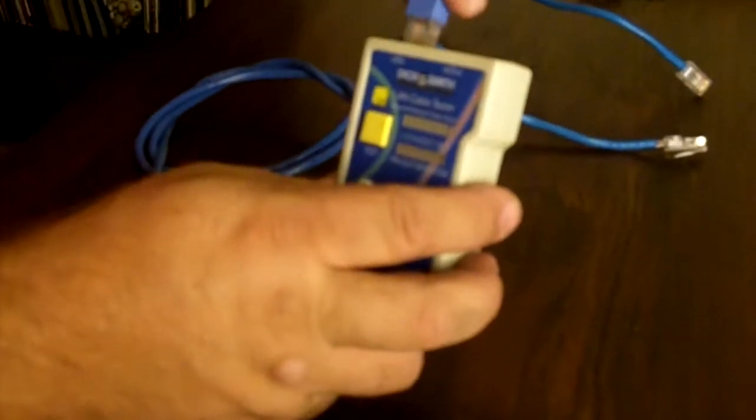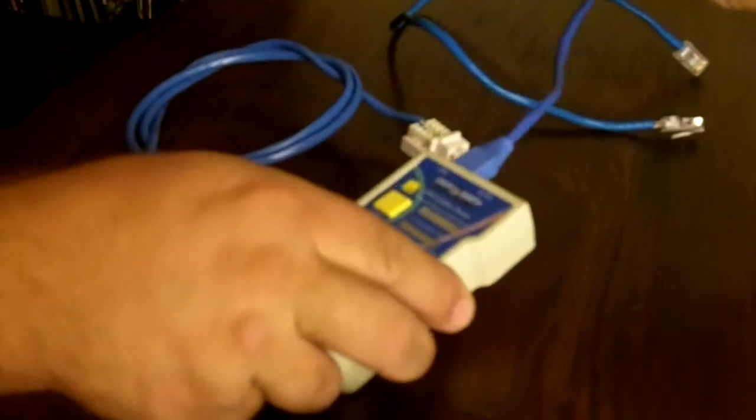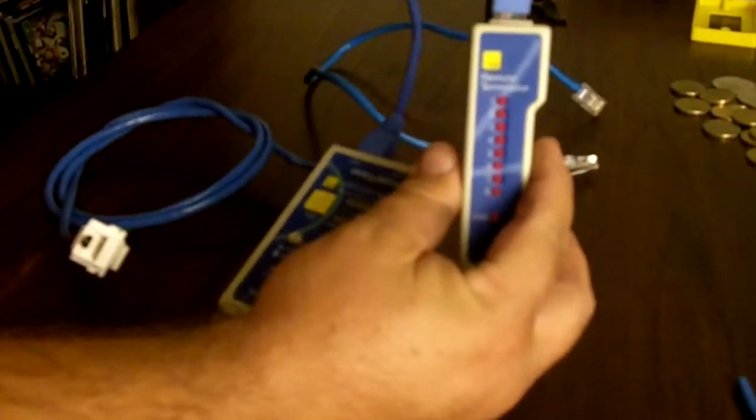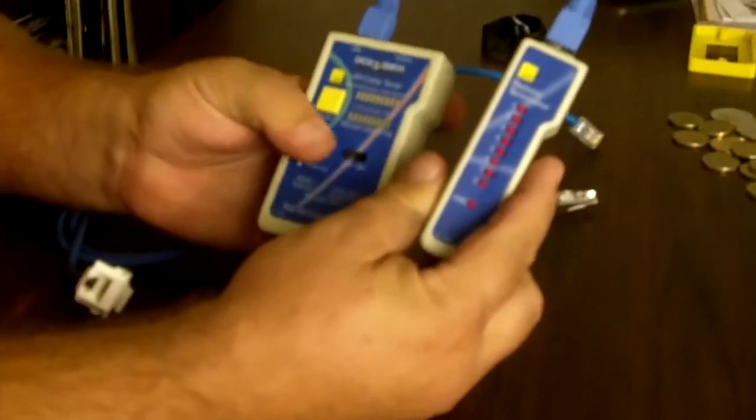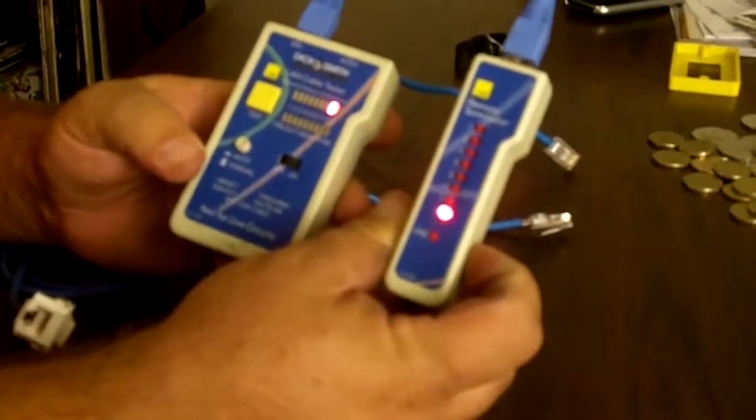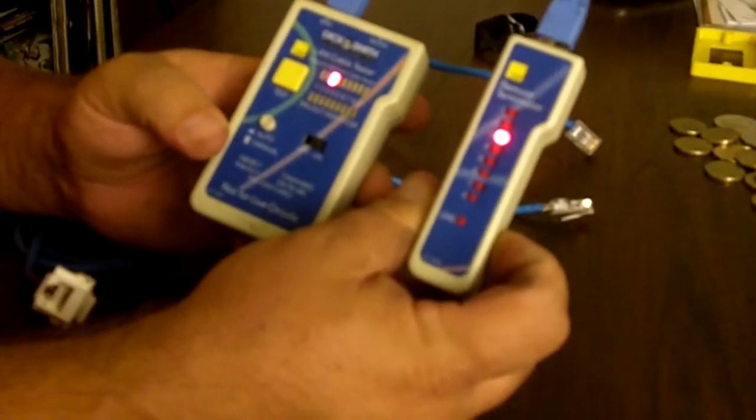First of all, we test each patch lead. Plug it into the cable tester and into the receiver, switch it on, and the lights should go in order like so.